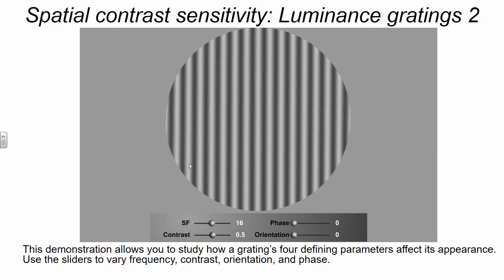This is a luminance grating. We call it a grating because, like a grate, we just have bars — dark bars and light bars that alternate: dark, light, dark, light across the image. We're going to assume that this circle represents one visual degree — one degree of the visual angle. So if the space around you is 360 degrees and you can see about 178 of that, this circle represents one degree diameter.